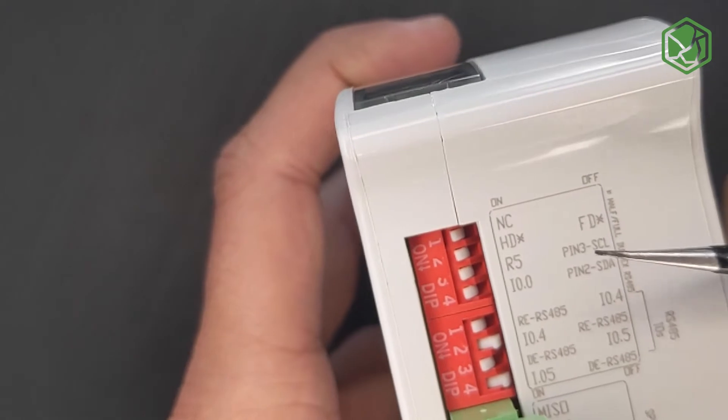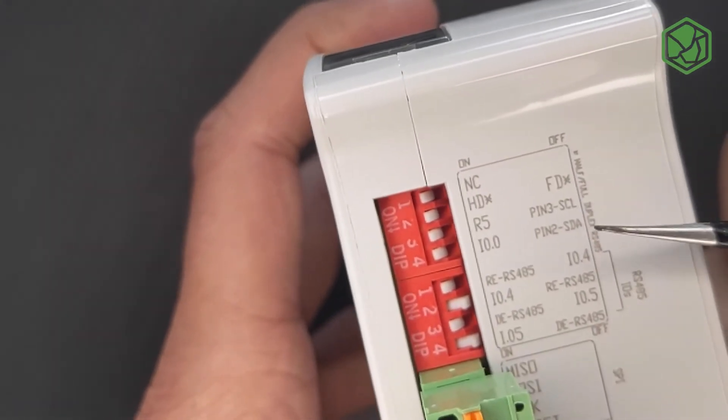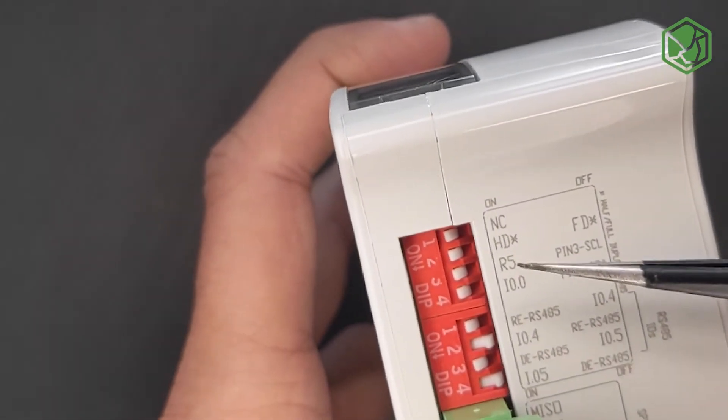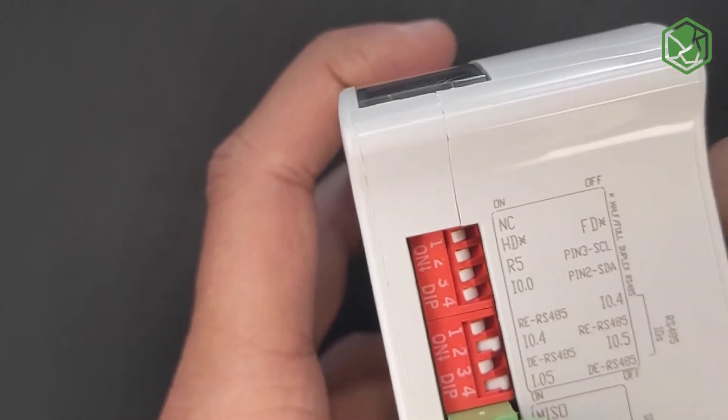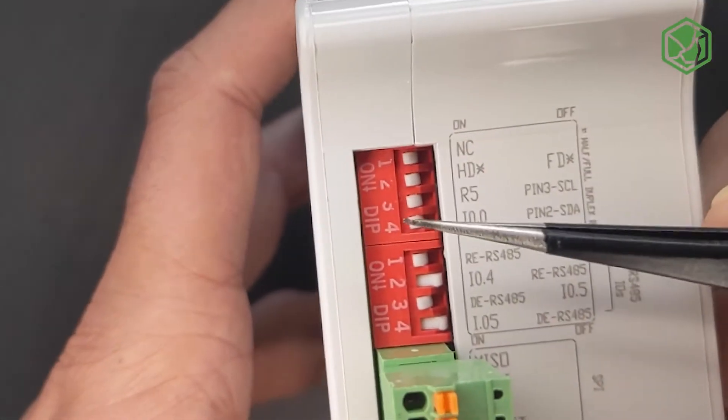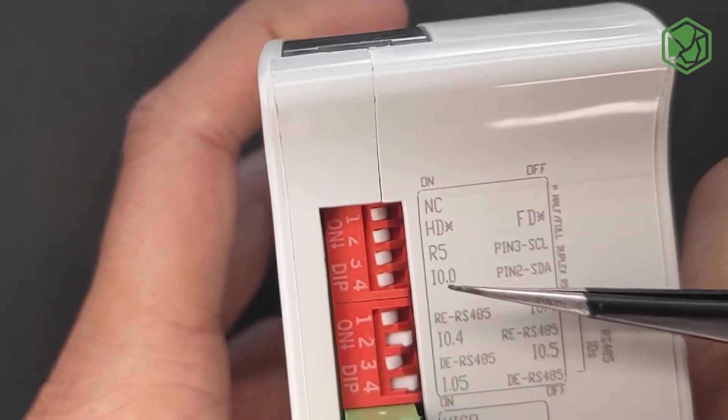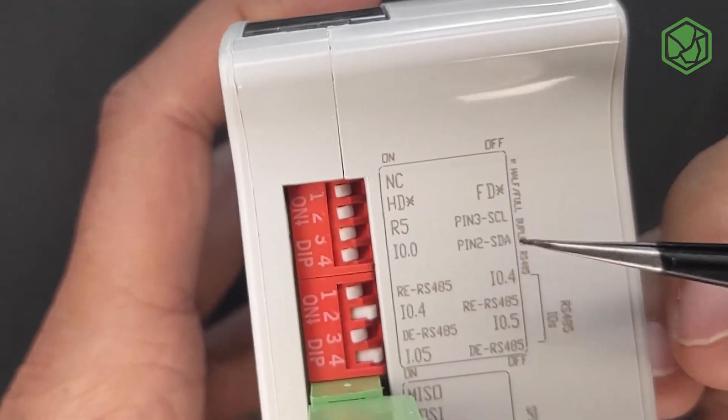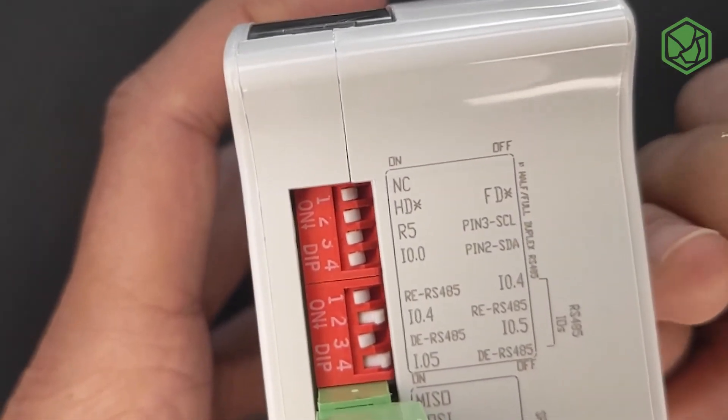Pin number three and four are specifically for I2C pins, SCL and SDA, or relay number five and input 0.0. If they're turned on, relay number five and input 0.0 are configured. If they're turned off, the I2C pins are configured.